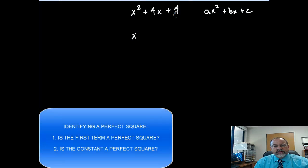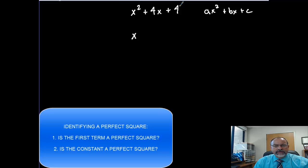The second thing I look for is the last term, the constant. Is that a perfect square? Can I take the square root of that and get one even number? And I can, the square root of 4 is 2.